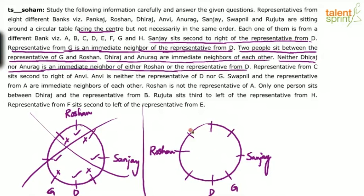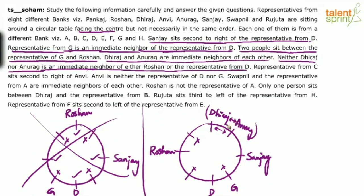With Roshan's position confirmed, we apply the Dheeraj-Anurag constraints again. They cannot be neighbors of Roshan or D, which rules out several positions. The only two consecutive positions available for Dheeraj and Anurag are now identified. They will occupy those two positions in some order, to be determined later.